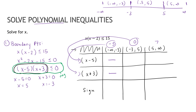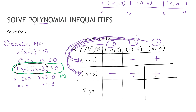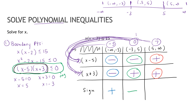For test point 7: 7 minus 5 is positive, and 7 plus 3 is positive. Now I'm multiplying these signs together. In the first interval: negative times negative is positive. In the second interval: negative times positive is negative. In the third interval: positive times positive is positive.